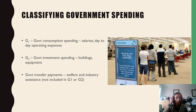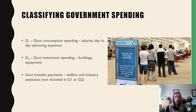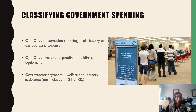To classify government spending, there are three main types. G1 is government consumption spending — salaries and day-to-day operating expenses, like teacher salaries and keeping facilities running. G2 is government investment spending — money spent on buildings, equipment, and infrastructure projects. A great example of G2 is the Westgate Tunnel, a major infrastructure project that injects money into the economy, creates jobs, and generates more aggregate demand.